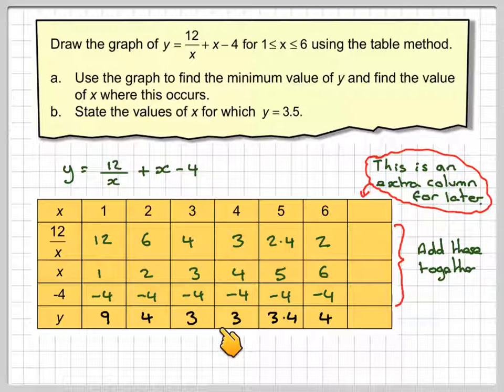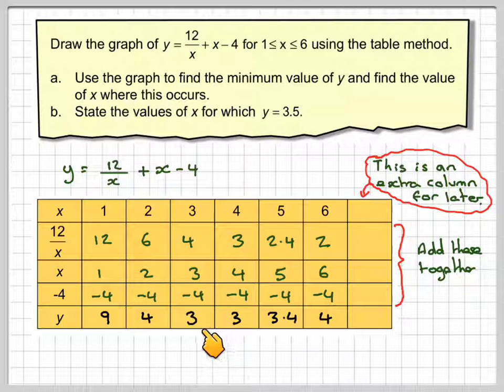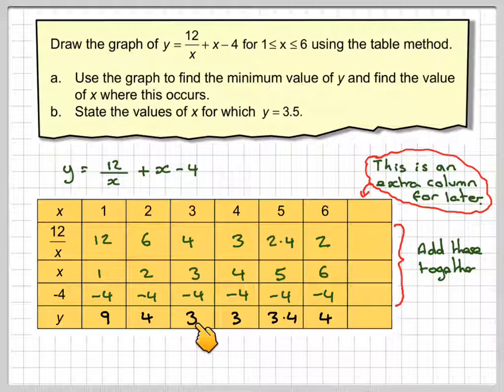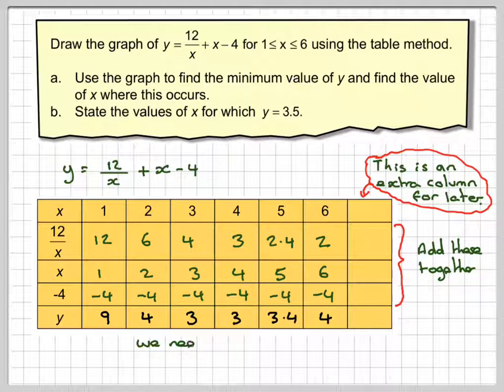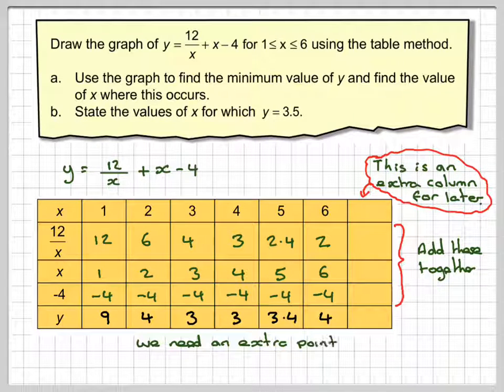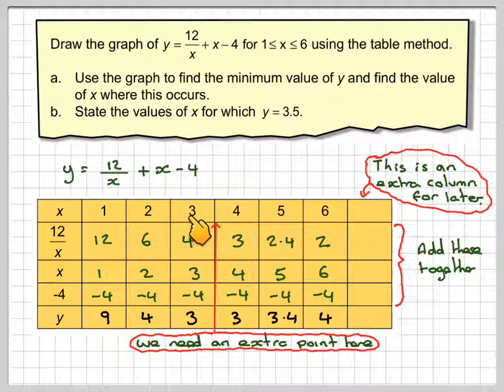Now if we look here, we've got two values of the same and they're the lowest values. If we're not careful, we'll just get a straight line at the bottom of the curve. So what we need to do is take an extra point here between 3 and 4. Here we'll put in 3.5.